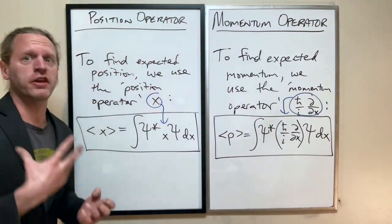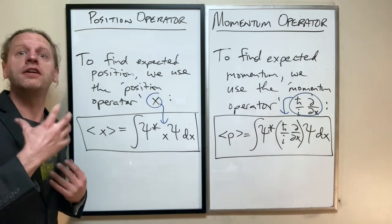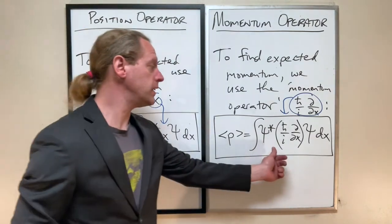Essentially every other observable we're going to be concerned about is built upon knowing the expected position and knowing the expected momentum.